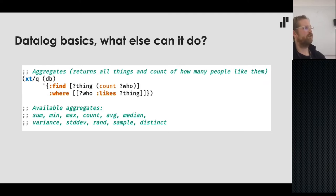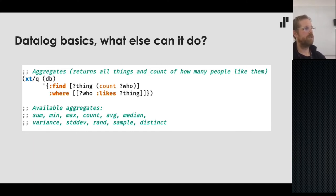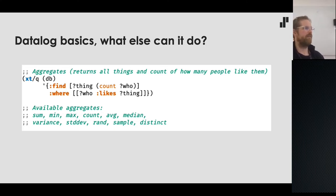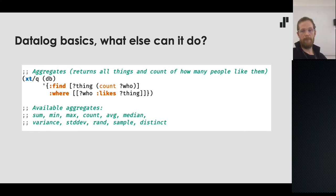XTDB has a separate Lucene index module for text searches. Aggregation is also a required feature: we can return all things and a count of how many people like them. The default set of aggregates includes sum, min, max, count, average, median, variance, and more — and you can create your own custom aggregates as well.